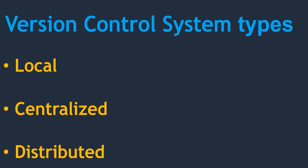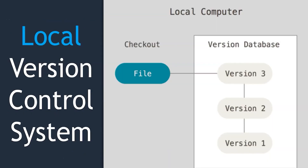Now let's see what kinds of version control systems are available: local, centralized, and distributed. A local version control system works on your local computer — you install it on your laptop and can track your changes. Each time you update a file, the changes are recorded along with when they were made, and it always points to the latest update. If you want to go back to a previous version, you can do so easily.